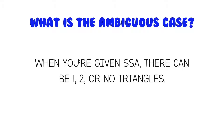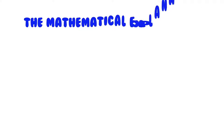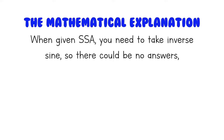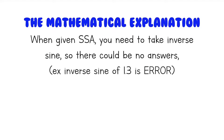And why does this happen? The mathematical explanation is that when you're given SSA, you will use the law of sines to find another angle, and to do that you'll use inverse sine. And when you take inverse sine, there could be no answers — for example, if you take the inverse sine of 1.3, your calculator will tell you error, because sine has to be less than or equal to 1.